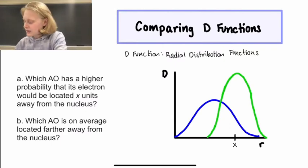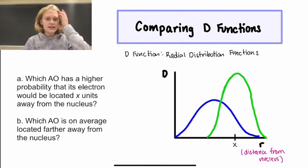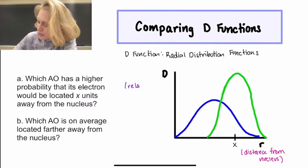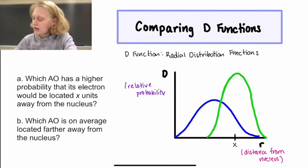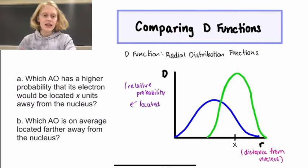On our horizontal axis we have little r or the radius, which is the distance from the nucleus. And on our vertical axis we have the d-function value which tells us about the relative probability that the electron is located at a given distance, so at a given r.